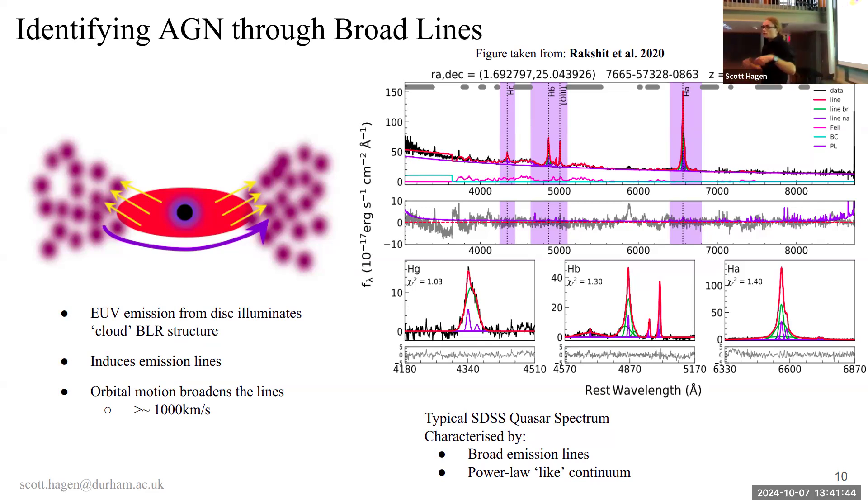Which is super convenient if you're an optical survey like SDSS, because you can make a selection and say, okay, if it looks blue in the optical, and it has broad emission lines, it's probably an AGN. And you can use that to define your sample. The question, of course, is that all AGN.